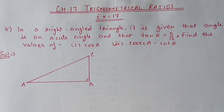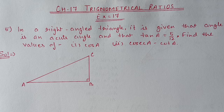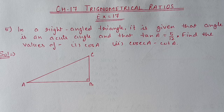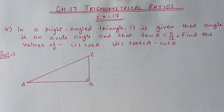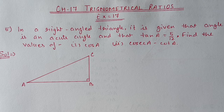Hello students, we are doing Chapter 17, Trigonometrical Ratios, Exercise 17. Till question number 4 we have already done, and today we are starting from question number 5. In a right angle triangle, it is given that angle A is an acute angle and that tan A is equal to 5 upon 12. Find the value of cos A.